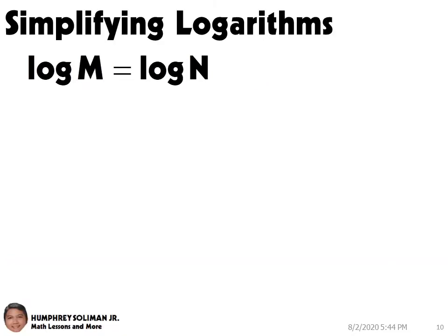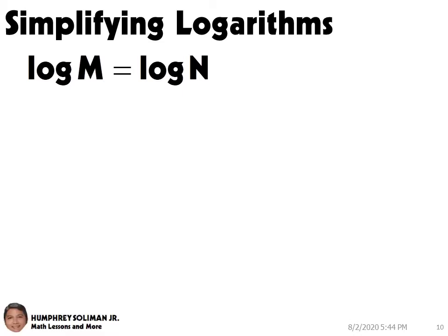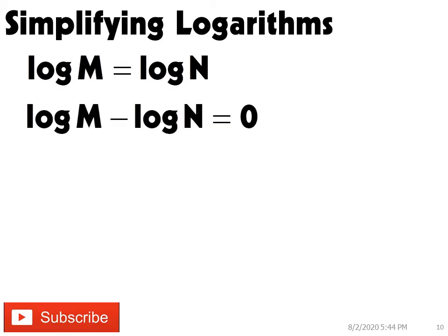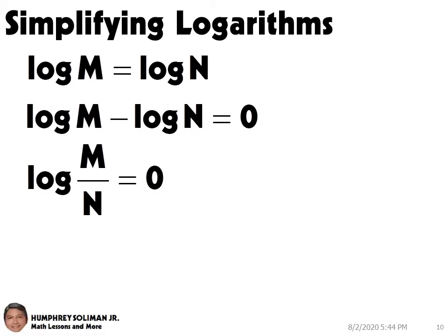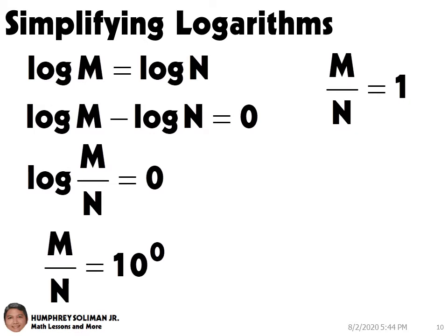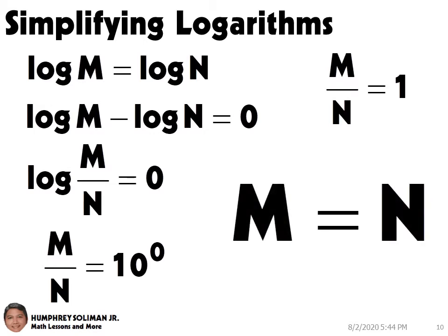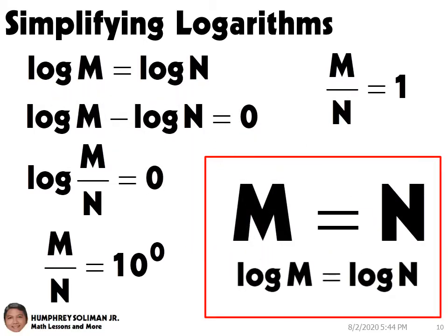We can also derive other rules for logarithms. We have here an example: log m equals log n. We first transpose the log n to the left side of the equation. Then, we write it as a single logarithm. According to the laws of logarithms, if we are subtracting logarithms, we need to divide m by n. Next, we write it as an exponential equation. Also, 10 raised to 0 is equal to 1. Since m over n equals 1, we can say then m equals n, if the logarithm of m equals the logarithm of n.